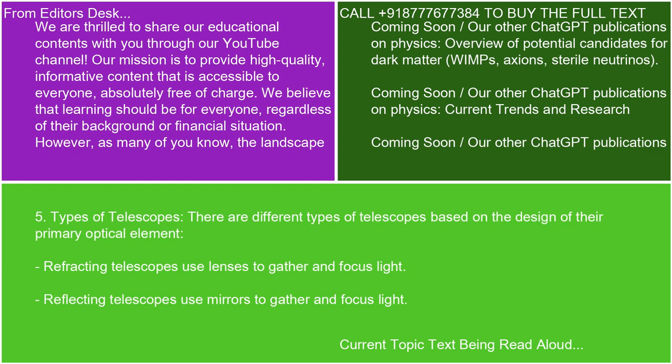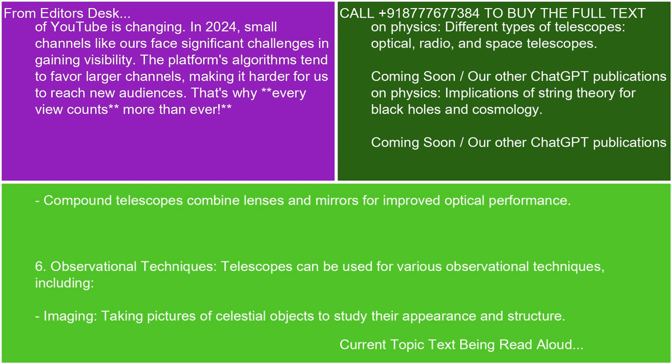5. Types of telescopes. There are different types of telescopes based on the design of their primary optical element. Refracting telescopes use lenses to gather and focus light. Reflecting telescopes use mirrors to gather and focus light. Compound telescopes combine lenses and mirrors for improved optical performance.